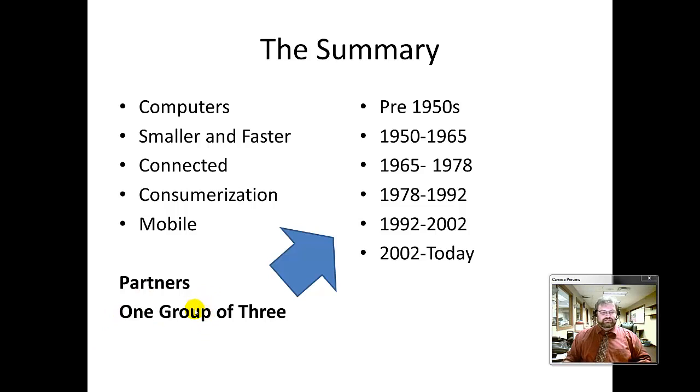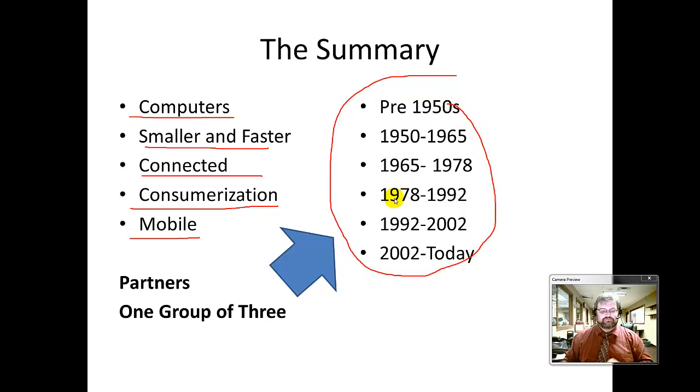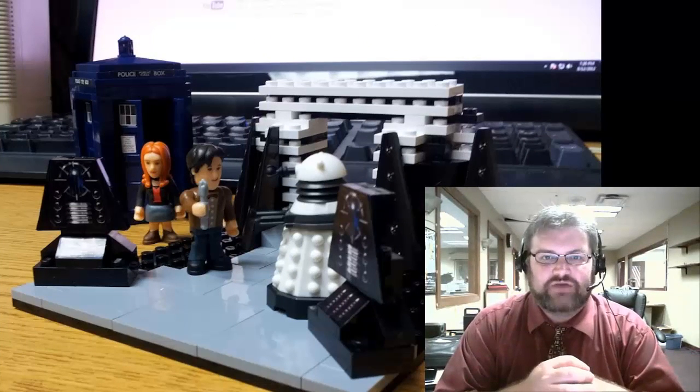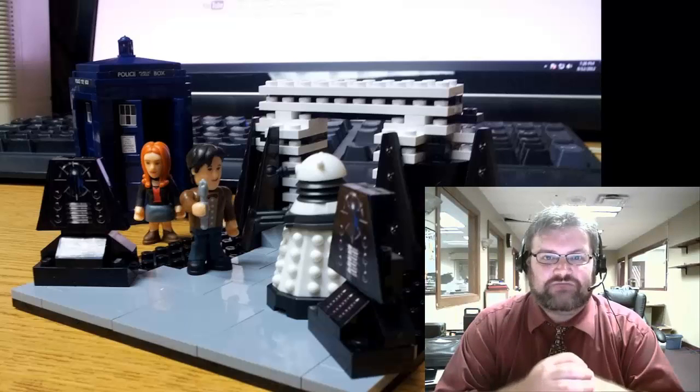So this is your summary slide. We have computers, smaller and faster, connected, consumerization, and mobile. Those are your five themes that you're going to choose from when you begin researching the history of computers. And we're going to divide it into time periods, but I'm going to go over that assignment with you tomorrow. So for tonight, just surf the internet for the year you were born, and find out what cutting edge technology and predictions were being made. I want you to put the link to it in an email and send it to me through your AMDGA account. The first person to get me that link will get first choice in what category or theme you're going to research and present on. We start research tomorrow. Good luck and have a great evening.